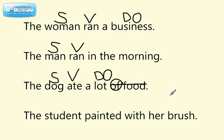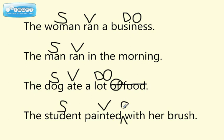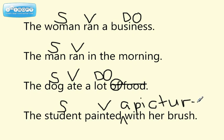Finally, our last sentence: the student painted with her brush. Our verb here is painted. Who painted? The student. The student painted what? You might be tempted to say brush, but did the student paint her brush? No, she didn't paint her brush — she painted with her brush. That's how she painted, not what she painted. You could add a direct object by saying the student painted a picture with her brush — that would be the direct object. But the student painted with her brush doesn't have a direct object.